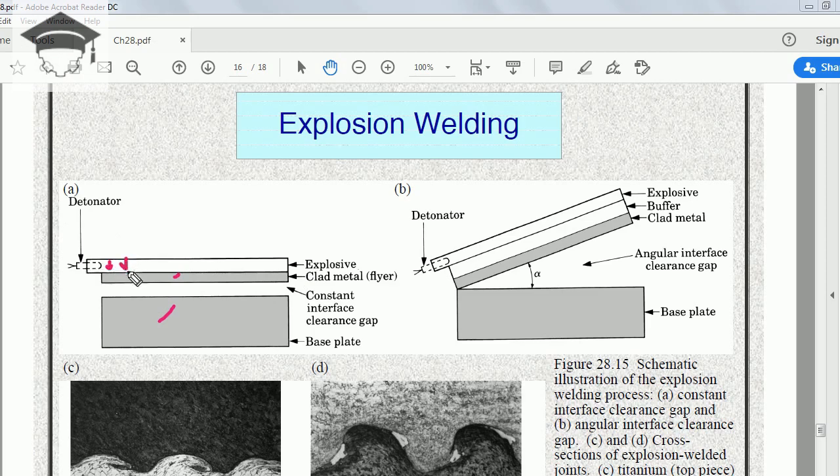When the explosive material explodes, it imparts very high energy, causing the clad metal, also known as the flyer plate, to move at such a high speed that it interacts with the base plate.